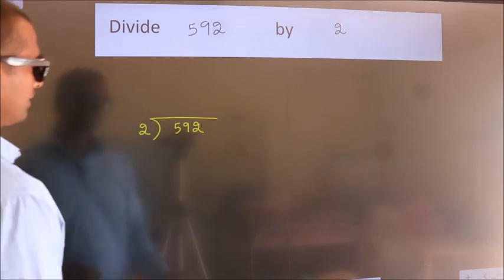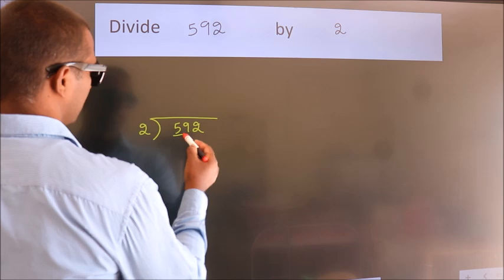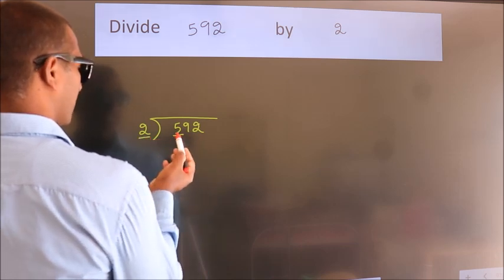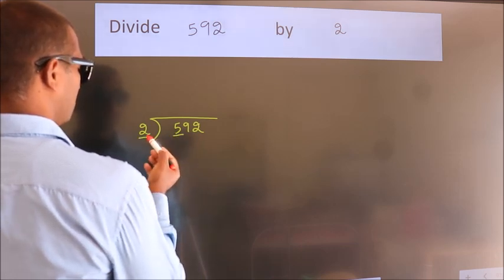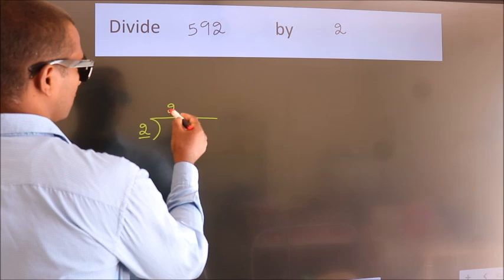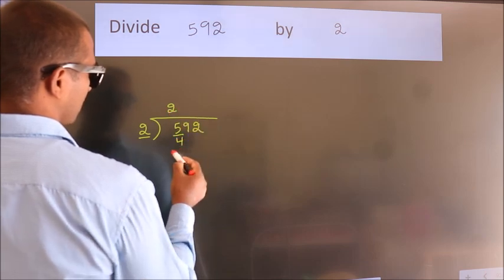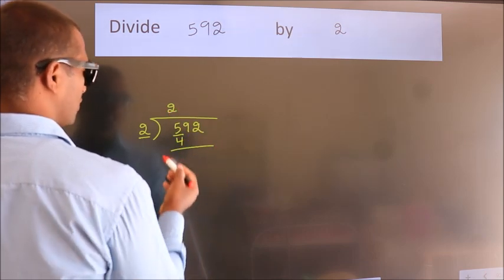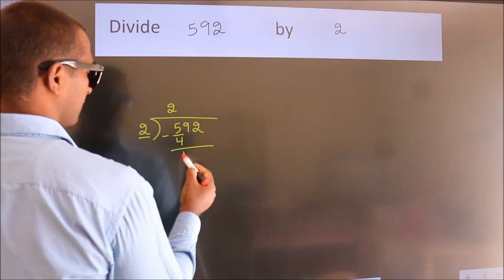Next. Here we have 5, here 2. A number close to 5 in 2 table is 2 2s, 4. Now we should subtract, we get 1.